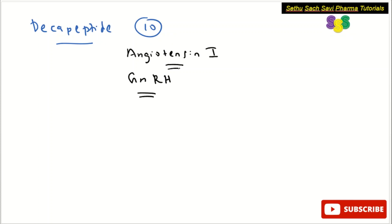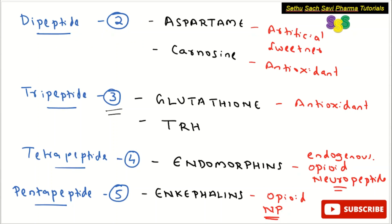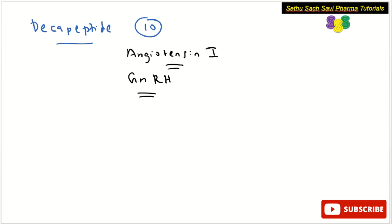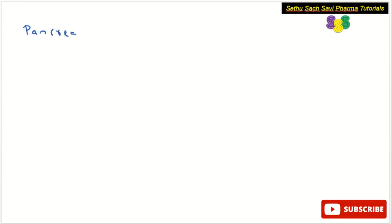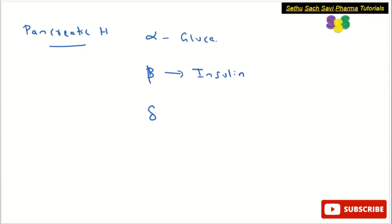So these are the important peptides: dipeptide, tripeptide, tetrapeptide, pentapeptide, hexapeptide, heptapeptide, octapeptide, nonapeptide, and decapeptide. Apart from this, you need to remember certain pancreatic hormones. The islets of Langerhans in the pancreas contain mainly three cells: alpha cells, beta cells, and delta cells. Beta cells secrete insulin, alpha cells secrete glucagon, and delta cells secrete somatostatin.